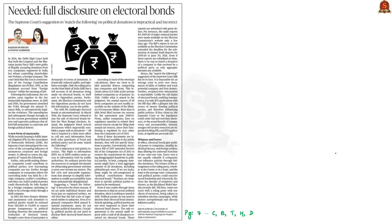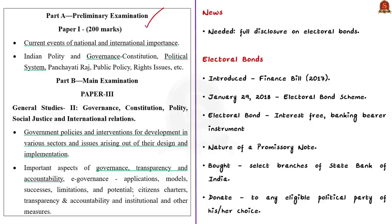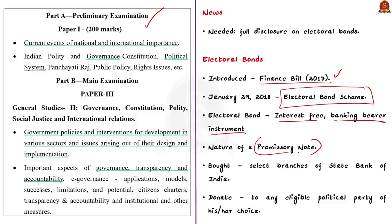Our next news discussion is based on the open editorial article titled 'Needed: Full Disclosure on Electoral Bonds.' This article deals with electoral bonds and critically examines the Supreme Court's suggestion on political donations. Electoral bonds were introduced with the Finance Bill 2017, and on January 29, 2018, the government notified the Electoral Bond Scheme. The electoral bond is an interest-free banking bearer instrument in the nature of a promissory note. These bonds can be bought from select branches of State Bank of India, where citizens or corporates can use them to donate funds to any eligible political parties.